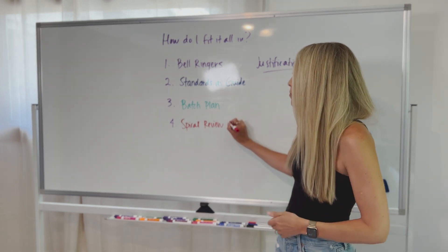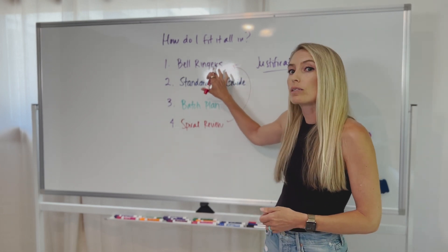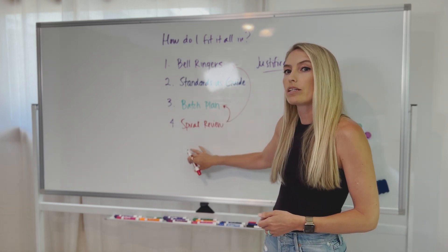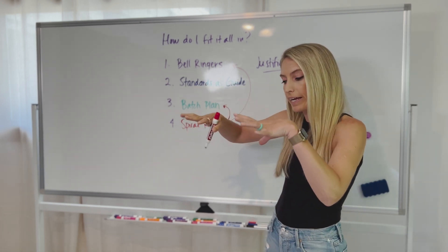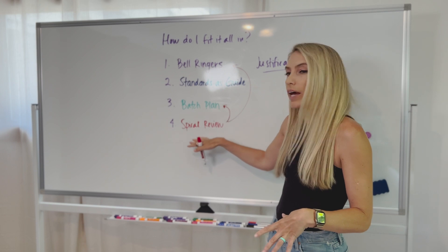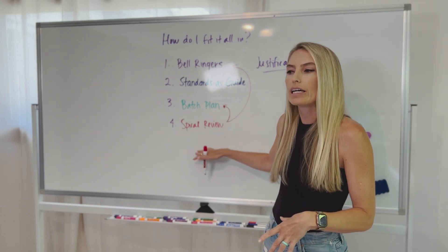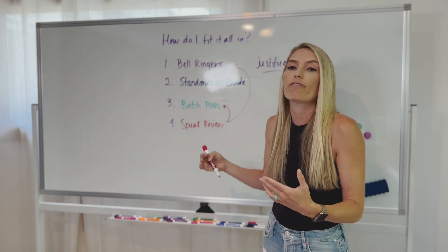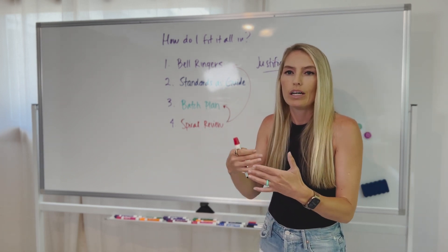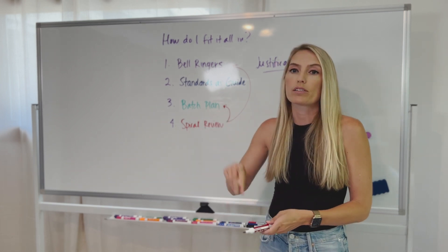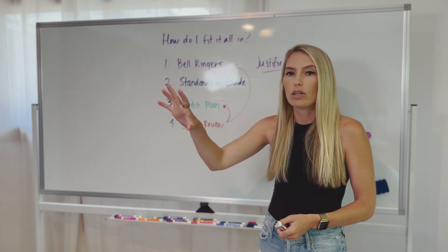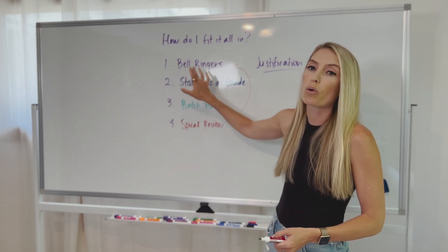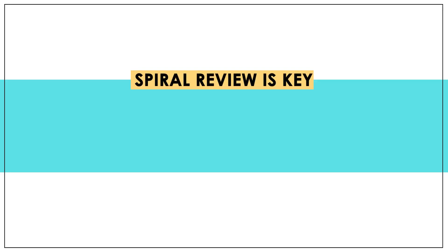And that's where also the bell ringers come into play because these allow us to easily do that. But that's also where batch planning comes into play too, because we can start to see as we're planning things out where we have holes. Oh my gosh, I taught narrative writing in August, but I haven't touched narrative writing again until October. Like I got to figure out a way to spiral review narrative writing in. And maybe as you batch plan, you put in a separate Friday that you're going to do a special narrative writing activity, or you're utilizing your bell ringers to support you in that capacity.